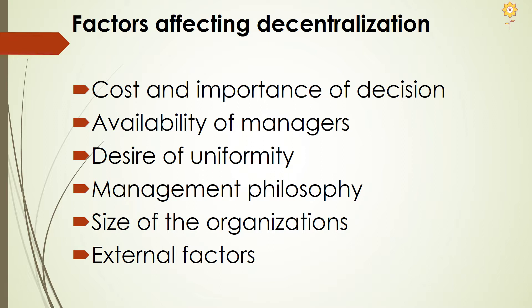Availability of managers: if you have enough number of competent managers, a decentralized form of working works for you because everybody would be in a position to take decisions. Desire for uniformity: if management wants decisions to be uniform throughout, then the level of decentralization reduces — because if you want uniformity, you must have only few people at the top directing the rest of the activity, so that becomes less decentralization. Management philosophy is another factor: if the management follows a professional approach, decentralization becomes more — people with a larger vision provide opportunities for subordinates to be part of decision making, leading to a better decentralized organization.